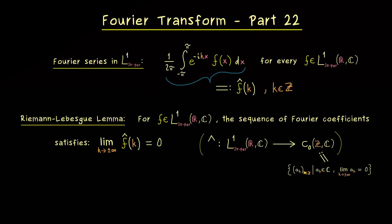However, what we definitely don't know is if this map is also surjective. At this point I can tell you that we don't have that — so this hat map will not hit all sequences tending to zero. Hence not every sequence in C0 is given by the Fourier coefficients of an L1 function.